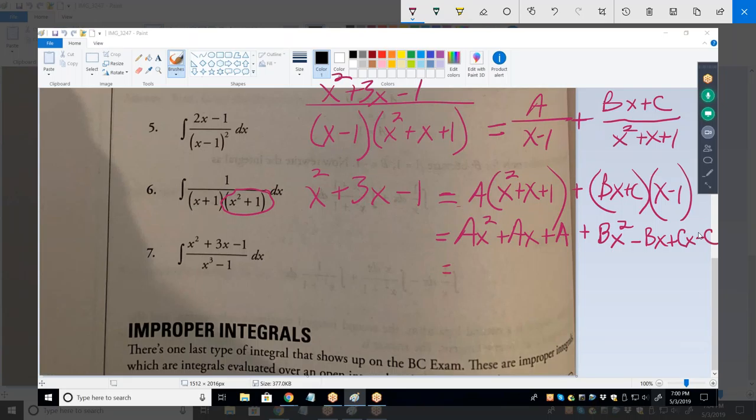Now, gather all like terms together and factor out the variable. So, we're going to have A plus B, or AX squared plus BX squared. And then we're going to factor out the X squared, leaving A plus B as its coefficient. In other words, we know the left side has an X squared term. Now, we know that A plus B has to equal one.